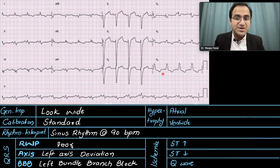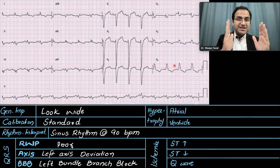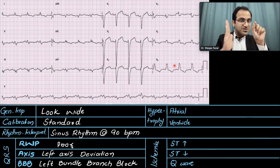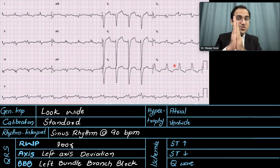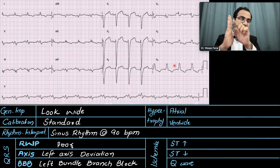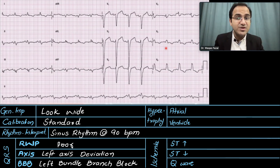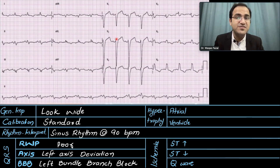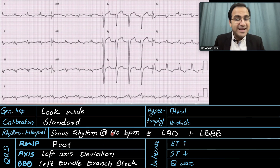Looking at bundle branch blocks: we have an M wave, though it is not very prominent in V6 — sometimes there is just a small notch on the QRS complex indicating it is a combination of two QRS complexes. This can be confirmed by looking at other leads. There is also slurring of the S wave in V1, V2, and V3. So there is left bundle branch block. The final rhythm interpretation: sinus rhythm at 90 beats per minute with left axis deviation and left bundle branch block.